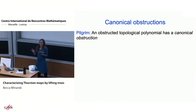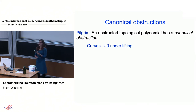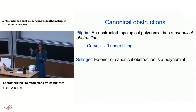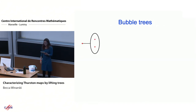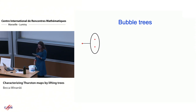What we focus on are not just Levy cycles but canonical obstructions, first defined by Pilgrim. Pilgrim says that an obstructed topological polynomial has a canonical obstruction, defined as the curves that converge to having length zero under the lifting process. Selinger reformulates it: the canonical obstruction is the minimal multi-curve such that the first return map on the exterior is actually a polynomial. To find it, we generalize the notion of trees to bubble trees.